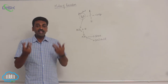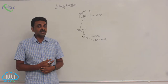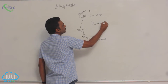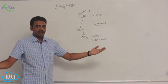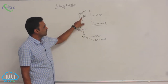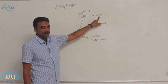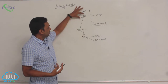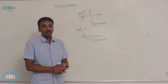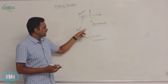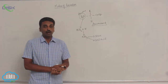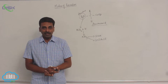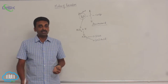When we take extra proteins — and all proteins contain amino acids — the extra amino acids undergo de-amination. An amino acid has an amino group on one side and a carboxylic group on the other. When we take extra amino acids or extra nitrogen, the amino group is removed. The removal of the amino group is called de-amination, and it combines with one more hydrogen to produce ammonia.